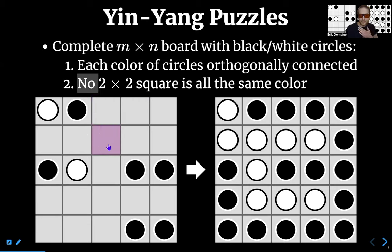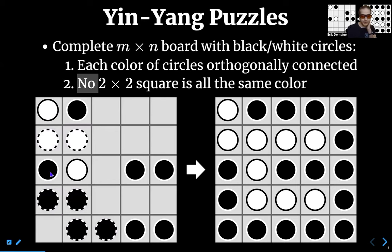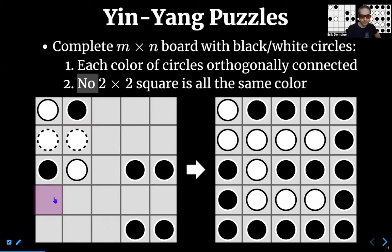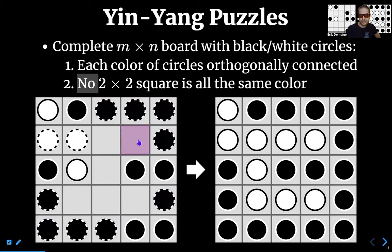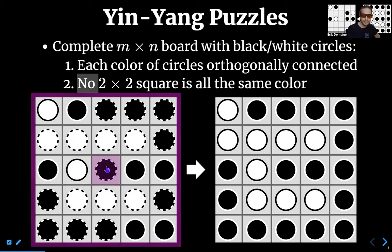You can make some derivations: for this white circle on the top left to connect to the rest of the white, both adjacent cells need to be white. You can similarly argue that the rest of the boundary needs to be black — if that black circle were connected to the other black boundary circle some other way, this cell would have to be white, and then that white is disconnected. So we have black all along the boundary. Then, for example, we can't have black in a certain spot because of the two-by-two rule, so it has to be white. By connectivity on the white, more cells must be white, and then by the two-by-two rule the last cell has to be black. And so we solved the puzzle — that gives you a flavor of yin-yang puzzles.